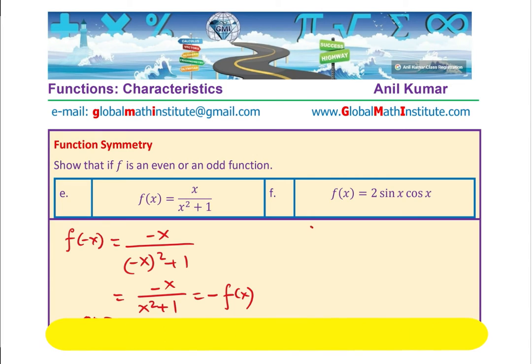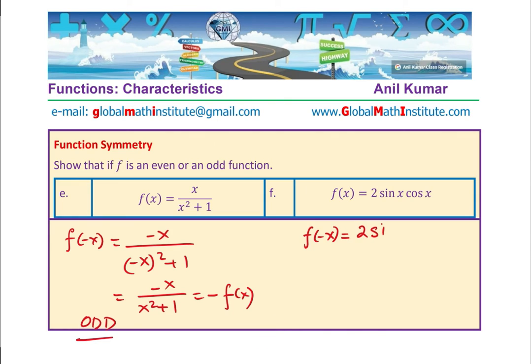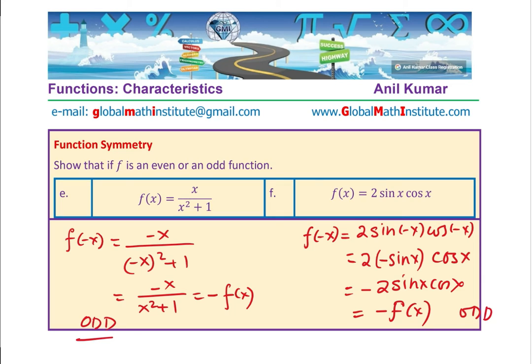The last one here is a trigonometric function. So if I write -x, I get 2 sin(-x) times cos(-x). That gives me what? Sine of -x—sine is an odd function, right? So we get 2 times -sin x, but cosine is an even function, so we get cos x. Multiplying we get -2 sin x cos x, and that clearly is -f(x). And therefore, it has an odd symmetry. You get the idea.